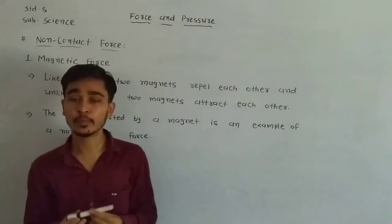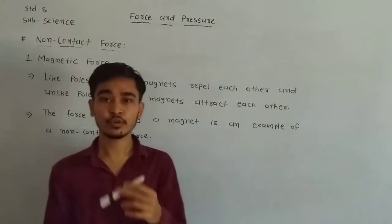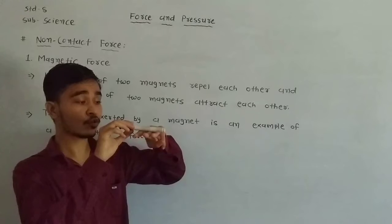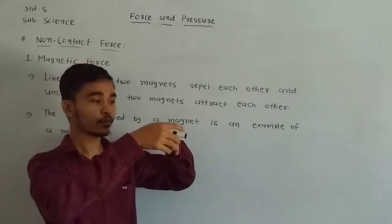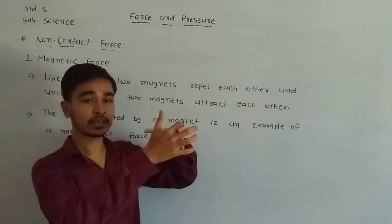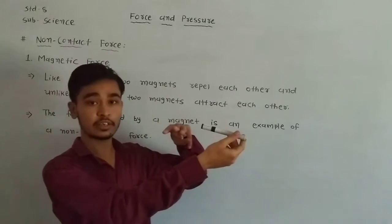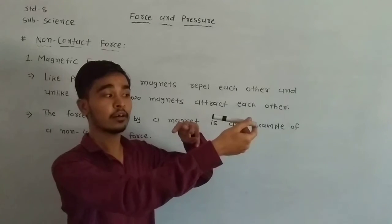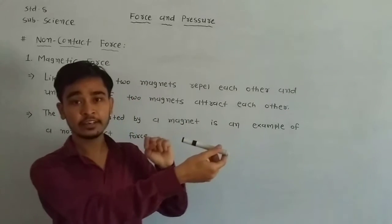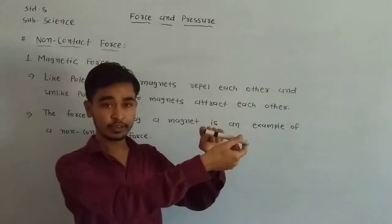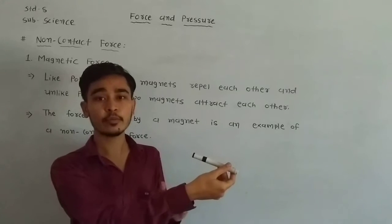हमें पता है कि कोई भी bar magnet के दो poles होते हैं — एक south pole और एक north pole। पहले हमने जो pencil पर bar magnet arrange किया है, उसका यहाँ पर north pole है। और दूसरे bar magnet का भी south pole है। तो अब हमें observe करना है कि क्या होता है।